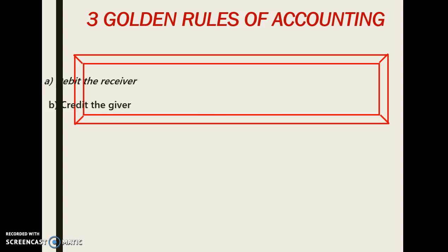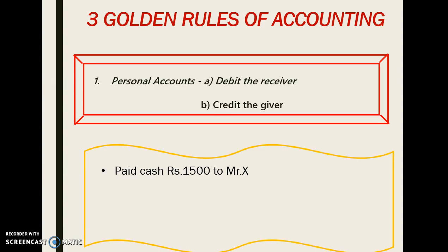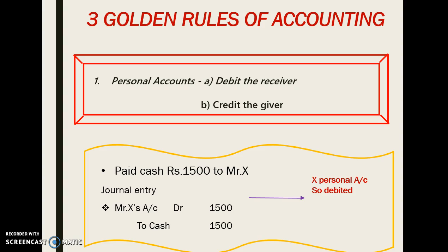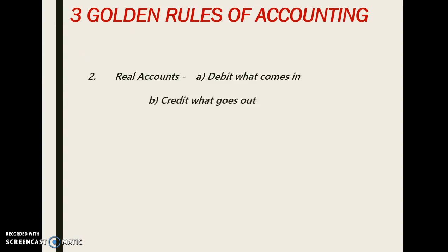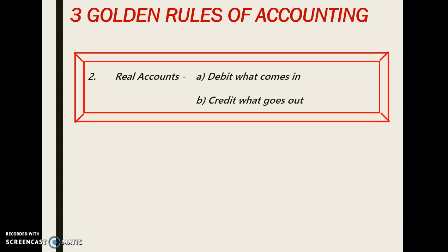Let's see one example: paid cash rupees 1500 to Mr. X. The journal entry is X account debit to cash. Here, X's personal account is being debited because he is the receiver, and cash is being credited because cash is a real account and cash goes out from our business. So as per the first golden rule — personal account: debit the receiver and credit the giver.